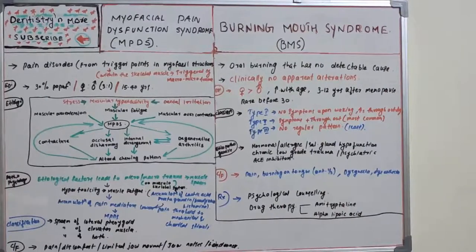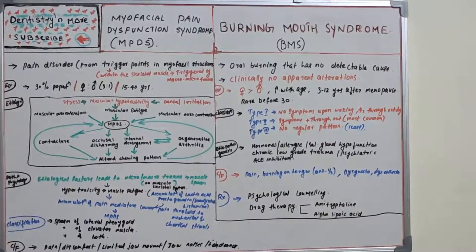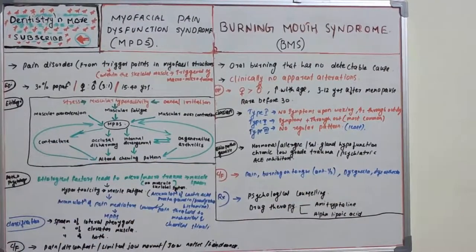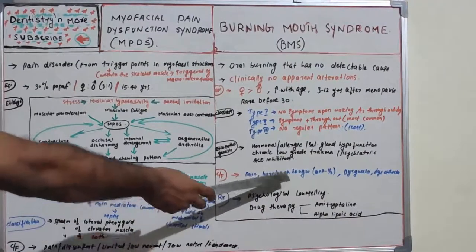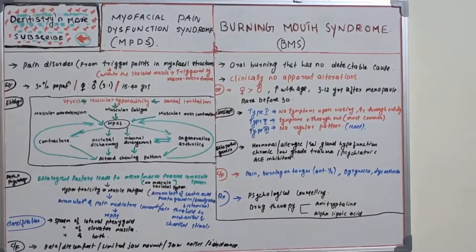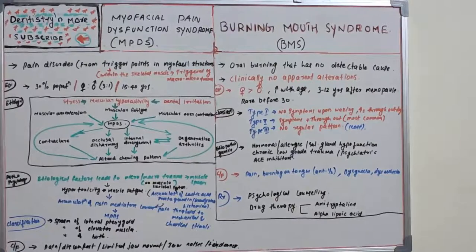Clinical features of burning mouth syndrome include a burning sensation especially on the anterior part of the tongue, dysgeusia (altered taste), and dysesthesia (itching or pain sensation), particularly present on the anterior one-third of the tongue.